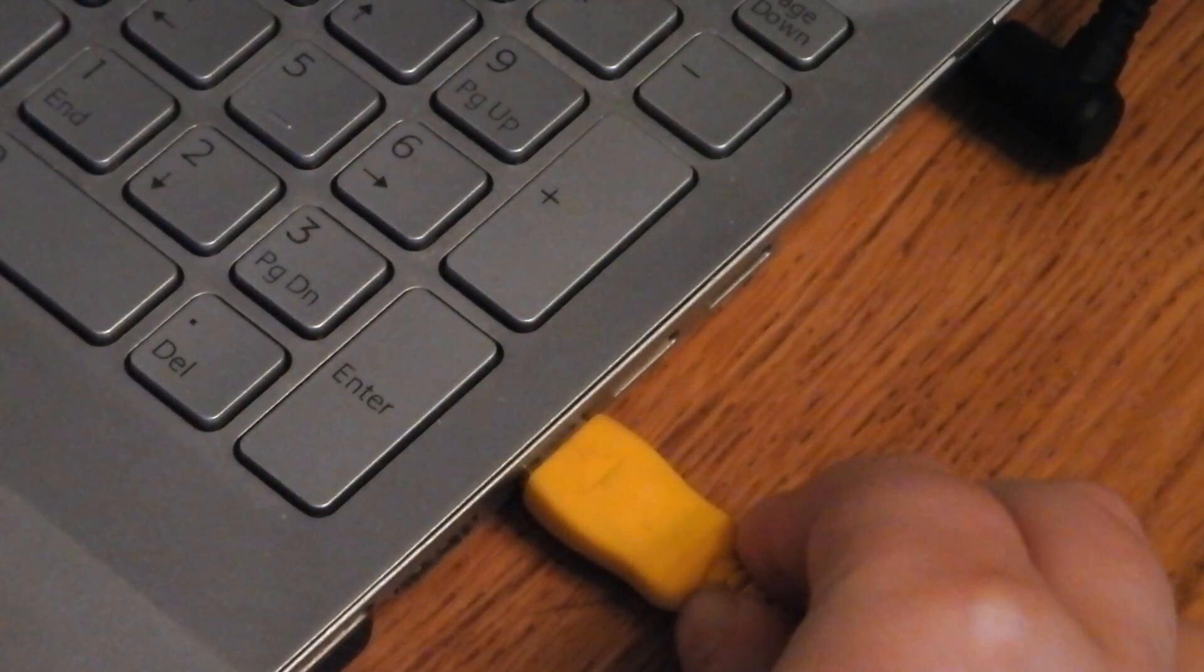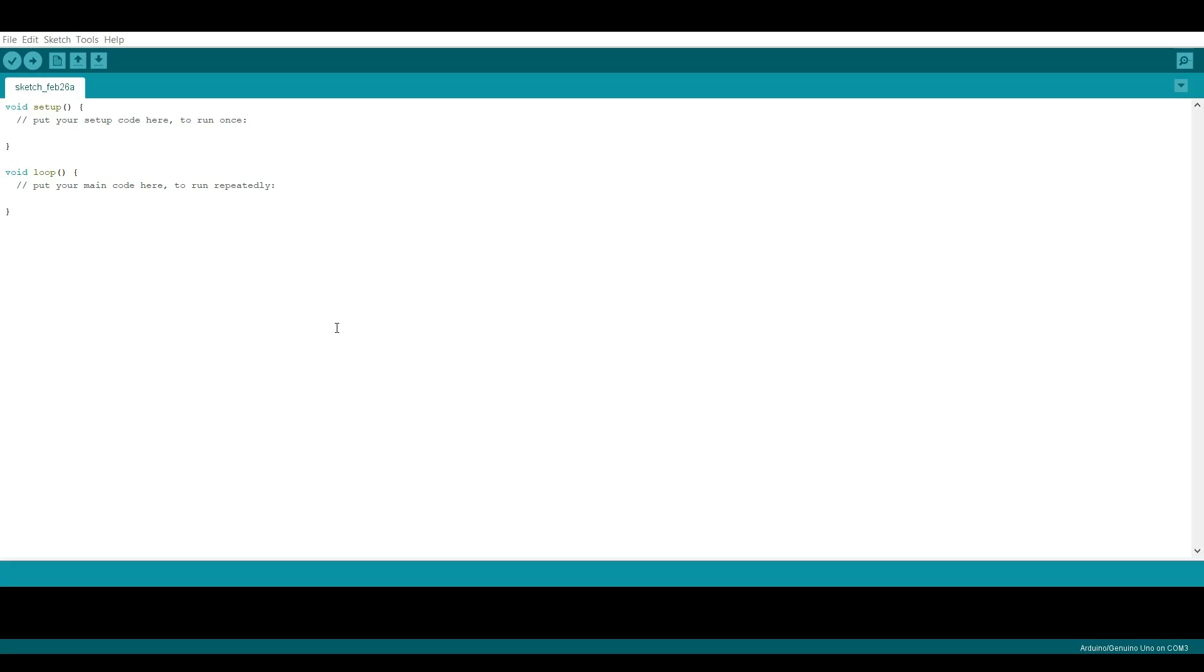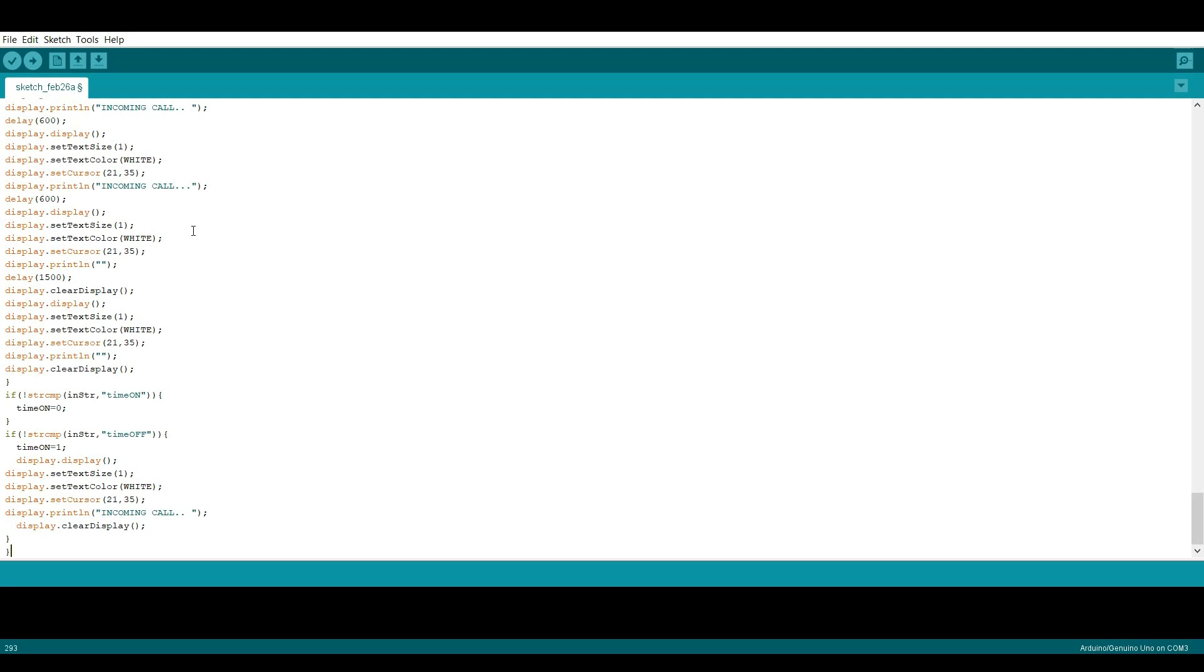It's time to upload the code. So connect your Arduino to your PC and copy paste the code into the Arduino IDE. Of course don't forget to download the required libraries.